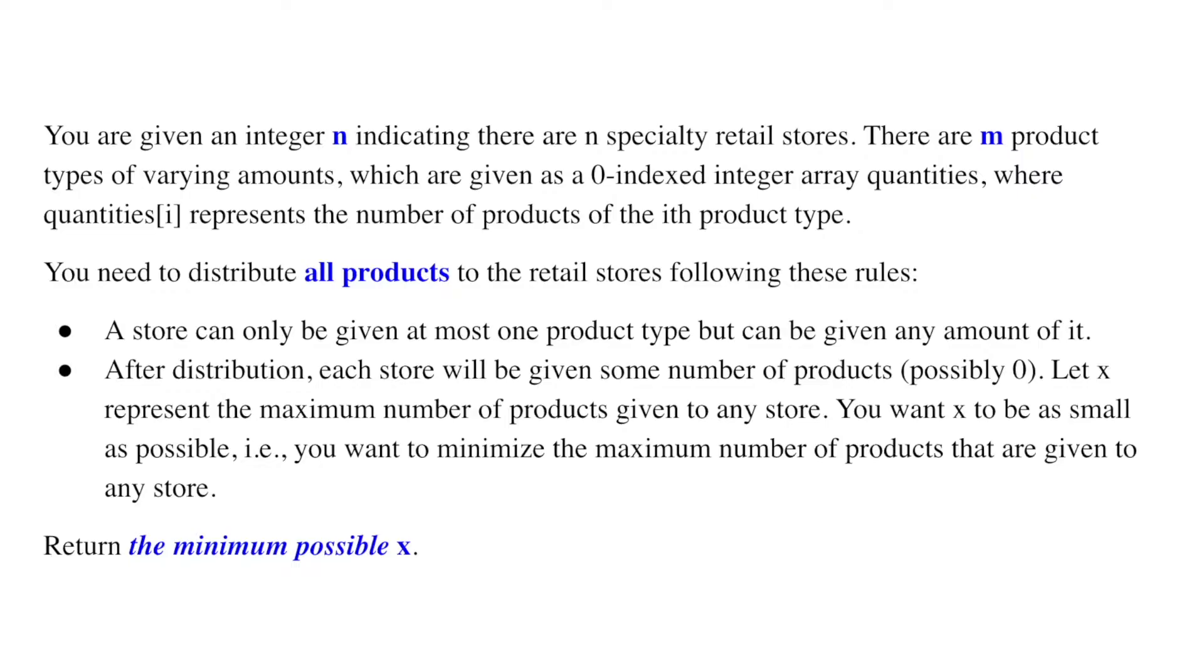You are given an integer n indicating there are n specialty retail stores. There are m product types of varying amounts, which are given as a zero-indexed integer array quantities, where quantities[i] represents the number of products of the i-th product type.